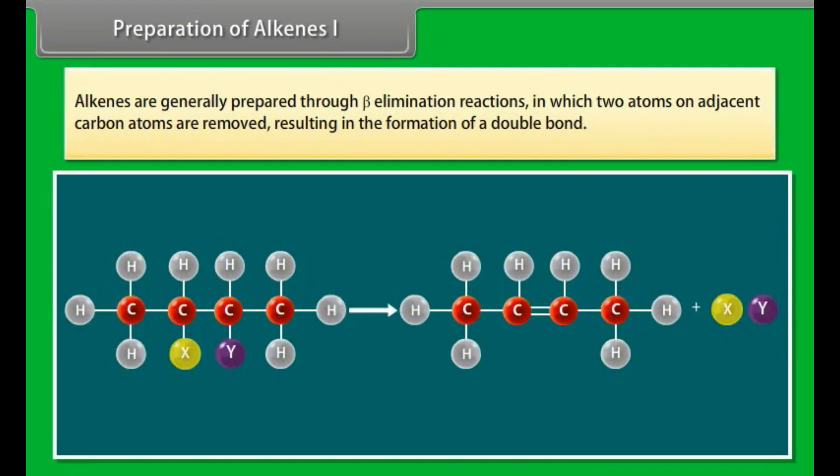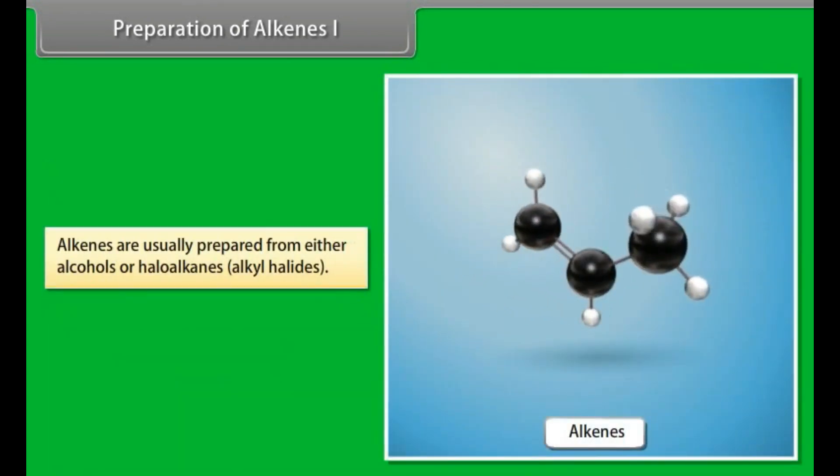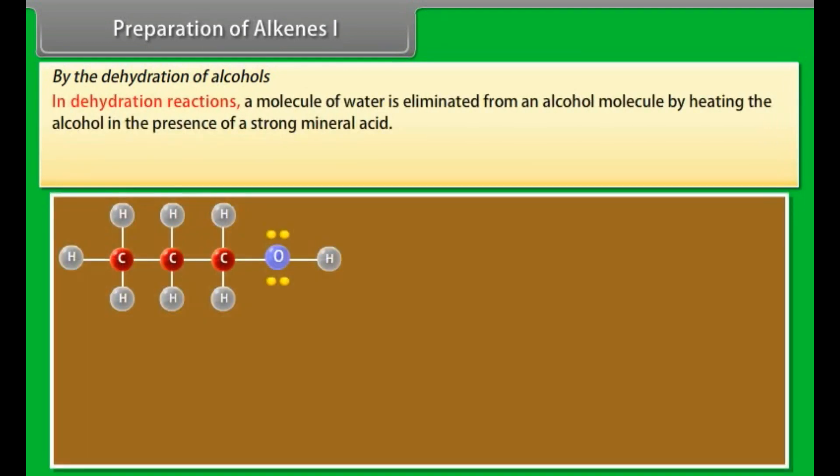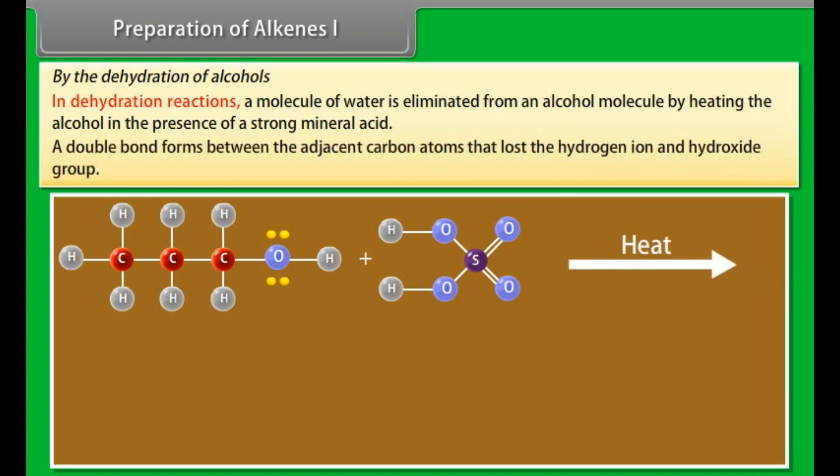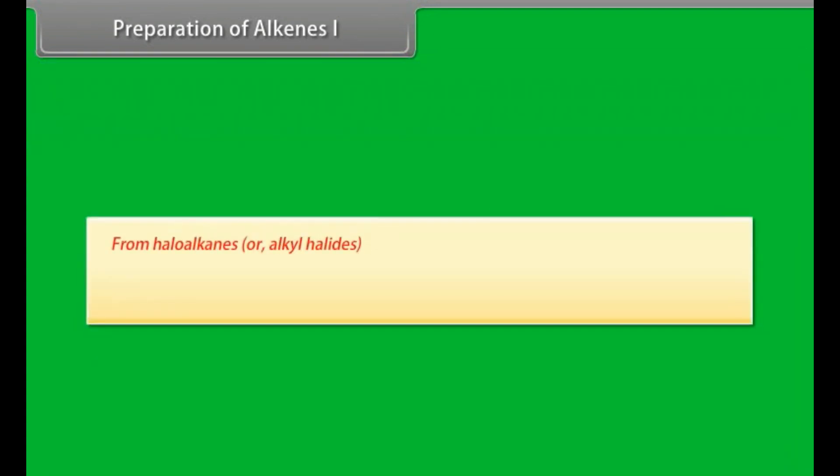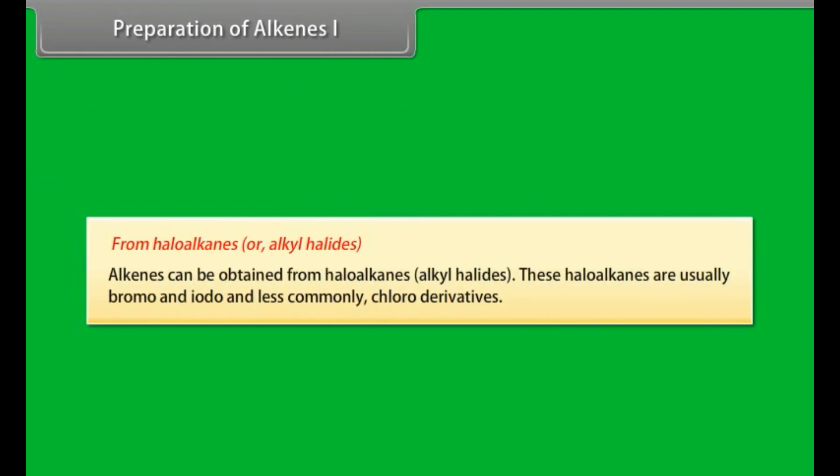Preparation of alkenes Part 1. Alkenes are generally prepared through beta elimination reactions in which two atoms on adjacent carbon atoms are removed, resulting in the formation of a double bond. Alkenes are usually prepared from either alcohols or haloalkanes, alkyl halides. By the dehydration of alcohols, in dehydration reactions a molecule of water is eliminated from an alcohol molecule by heating the alcohol in the presence of a strong mineral acid. A double bond forms between the adjacent carbon atoms that lost the hydrogen ion and hydroxide group. From haloalkanes or alkyl halides, alkenes can be obtained from haloalkanes, alkyl halides. These haloalkanes are usually bromo and iodo and less commonly chloro derivatives.